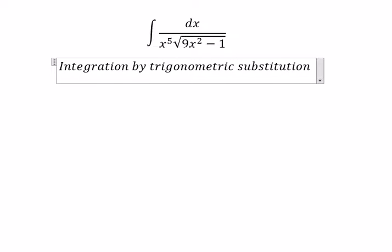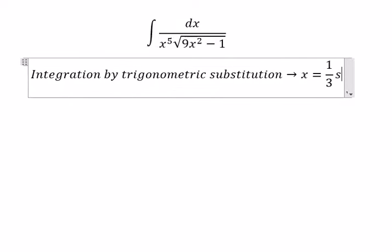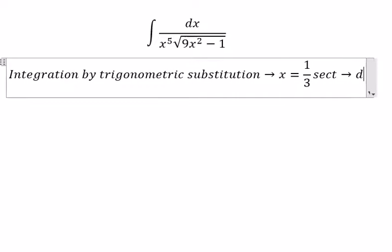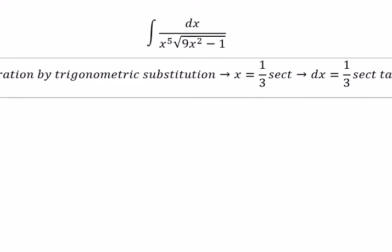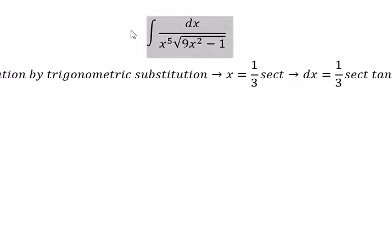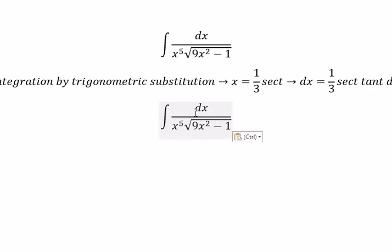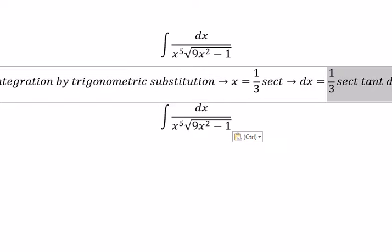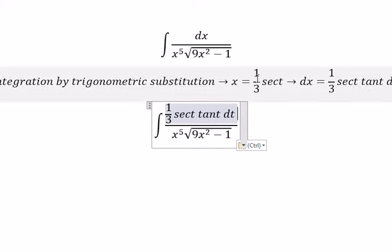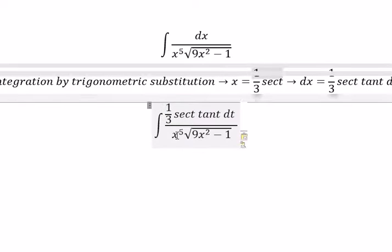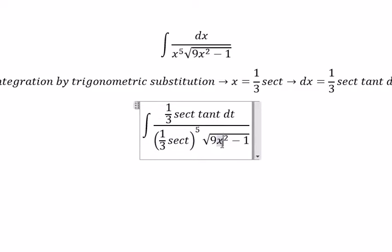So we put s equal to 1 over 3 sec of t, ds equal to 1 over 3 sec of t times tan(t) dt. So we change the s into this one, and we put this one in here.